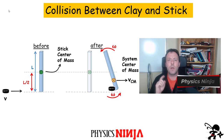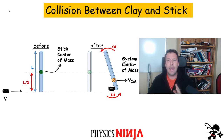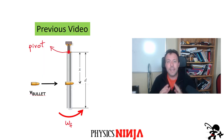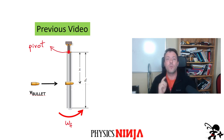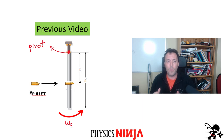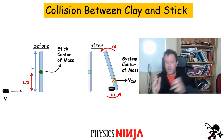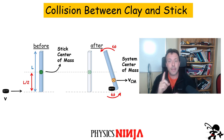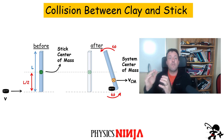Hi everybody, PhysicsNinja here. Today I want to look at a collision between a clay puck and a stick. In my previous video, which I'll link in the description, I dealt with a similar problem — a bullet striking a stick. However, in that video there was a pivot point connected to a hinge and everything rotated about that pivot. In this case, we remove the pivot. We simply have a stick resting on a table and I'm going to fire a puck at it. I'm going to consider an inelastic collision where the puck sticks to the stick.